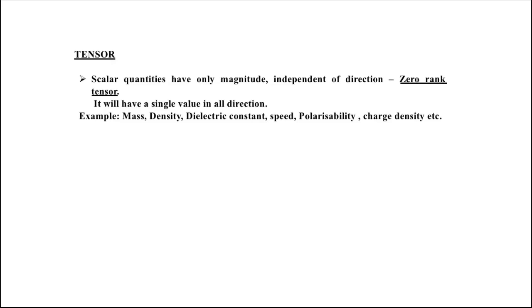What is a tensor? We have physical quantities. A physical quantity means any quantity which can be measured. We have physical quantities. The first type of physical quantity is nothing but a scalar quantity. What is a scalar quantity? A scalar quantity is one which has only magnitude. It represents a scalar quantity and we will get only a single value. It will be a scalar quantity.